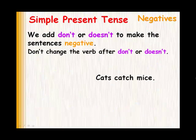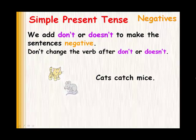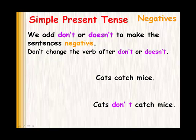Let's take a look at another example. Cats catch mice — I bet you remember this sentence from another video. If we had to do the negative, we would say cats don't catch mice. We use don't because the subject is plural — cats — and we place don't before the main verb.